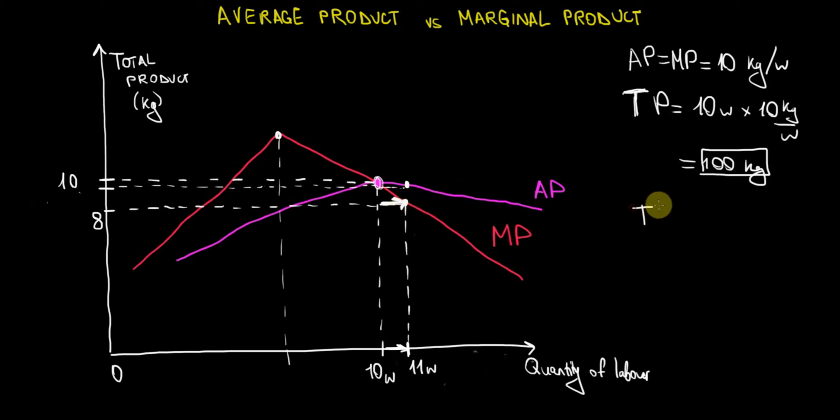So therefore, the total product after we go to the 11th employee, the total product created by 11 employees is going to be 100 kilograms that we used to have plus the marginal product of 8 kilograms harvested by the 11th employee. So that becomes 108 kilograms.